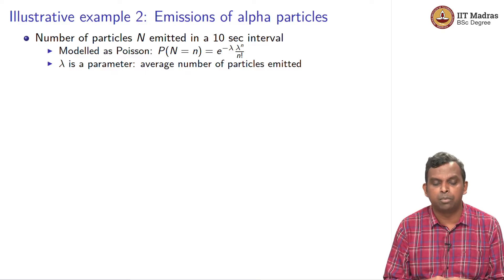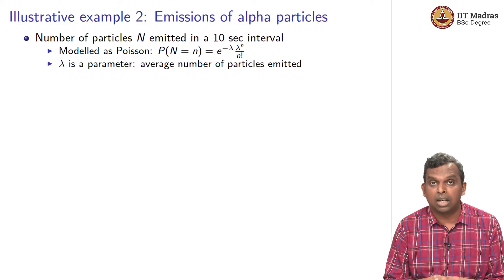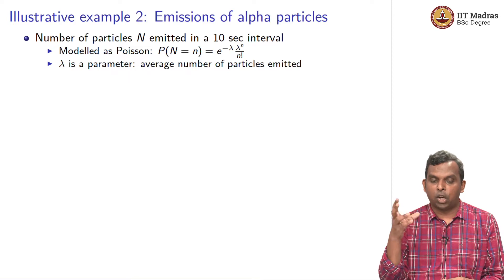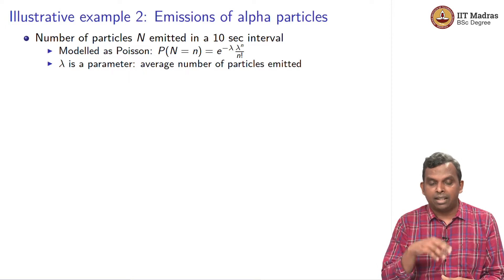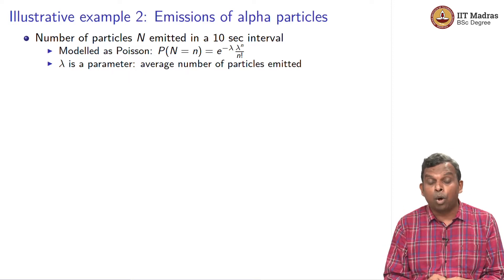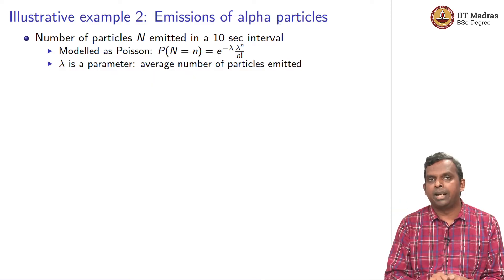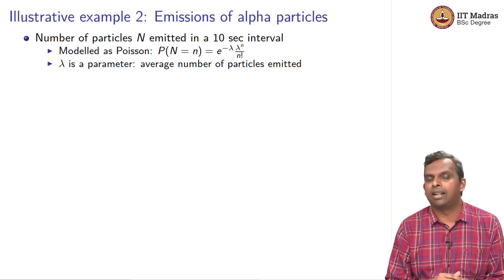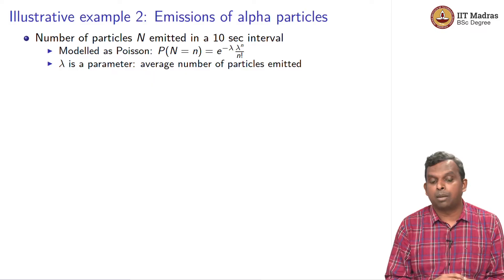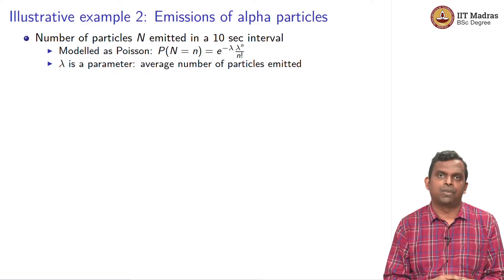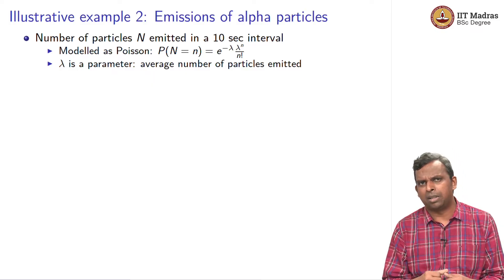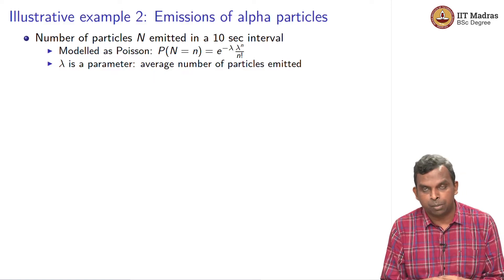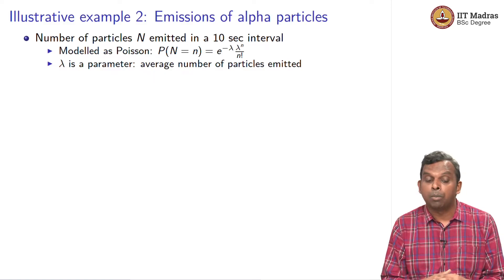One such particle is the alpha particle — it is two neutrons plus two protons, just the nucleus of helium. It is called an alpha particle and this is a very common emission. The theory is that you can model the number of particles emitted within a fixed time period — like a 10-second interval — as a Poisson distribution. Several experiments have been done and there are theoretical reasons for why it can be expected to be a Poisson distribution.